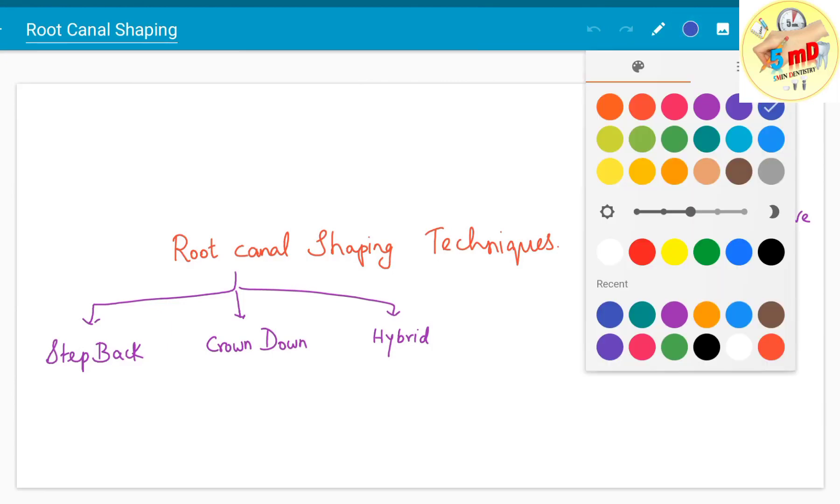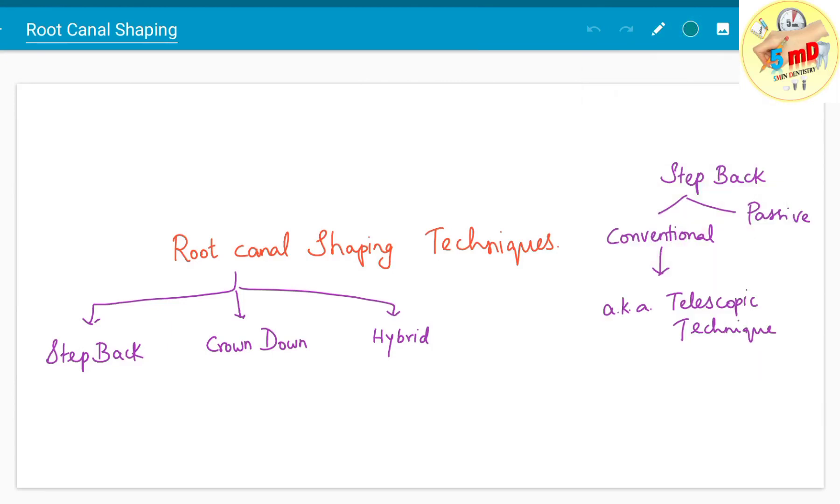Today let us see in detail about root canal shaping techniques. As we all know, there are three basic methods in root canal shaping: step back, crown down, and hybrid. Step back and crown down are the two techniques which we will see in detail in this video.